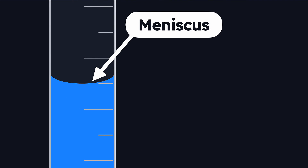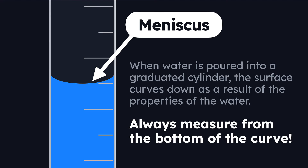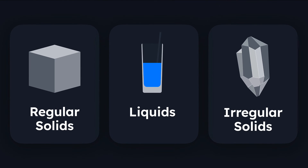However, you're going to notice something interesting: the top of the water is curved in something called a meniscus. When water is poured into the graduated cylinder, the surface curves downward as a result of the properties of water. The simple rule to follow is that you always measure from the bottom of the meniscus, or the bottom of the curve. That's how you determine the volume of a liquid.